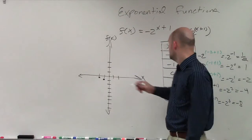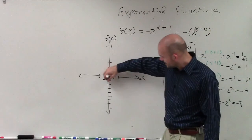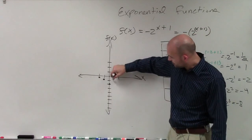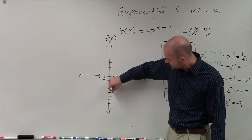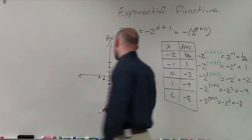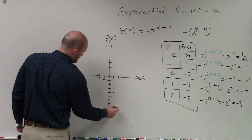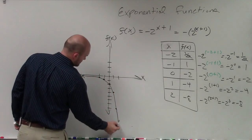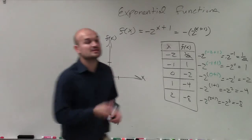At 0, we're down to negative 2. At 1, we're down to negative 4. And at 2, we're down to negative 8. So if I connect these now, that's what our graph looks like.